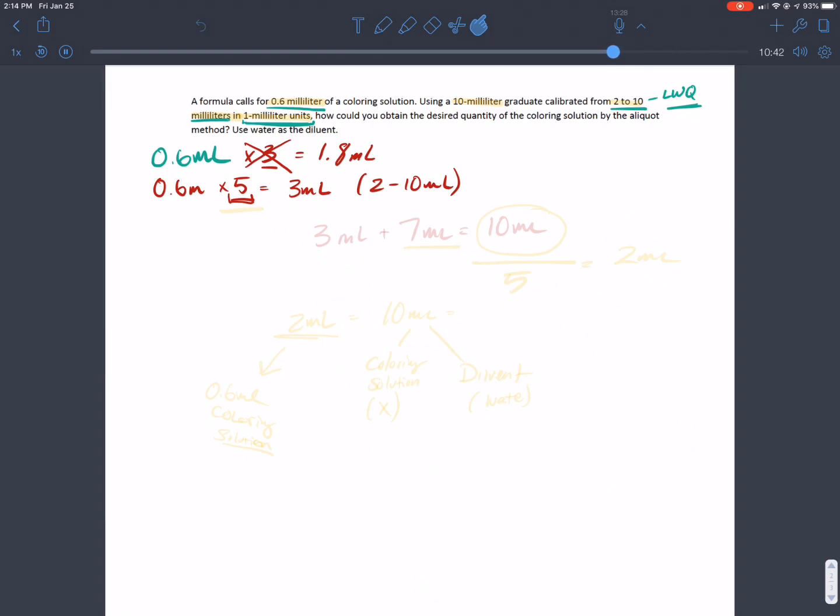So in order to follow forward on this, what we need to do is find a diluent or an amount of diluent, in this case it's going to be water, that will allow us to measure this out. And you want your total, so once you figure out how many milliliters of the diluent you need, you want your total to be divisible by the factor you multiplied by.